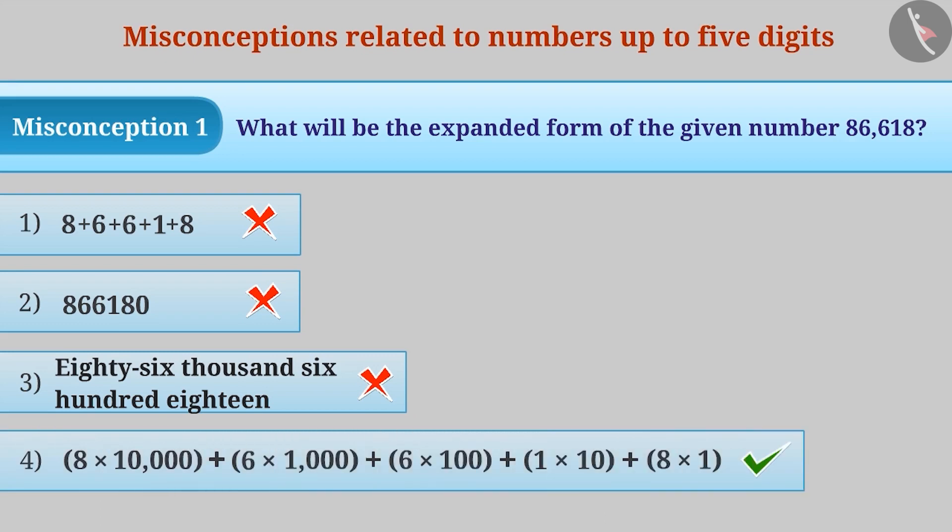To clear this misconception, it is important to understand that the number 8 is at ten thousands place, 6 is at thousands place, at the hundreds place is 6, 1 is at the tens place and 8 is in the ones place.